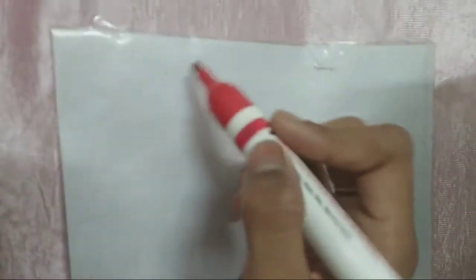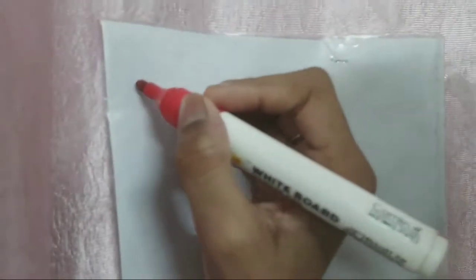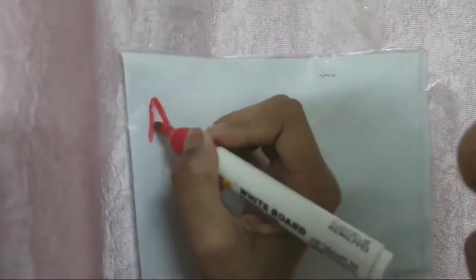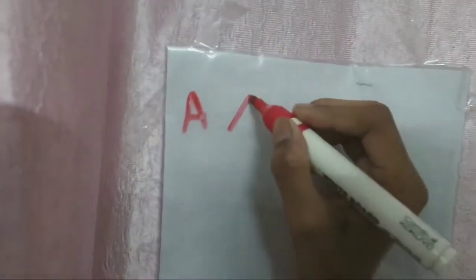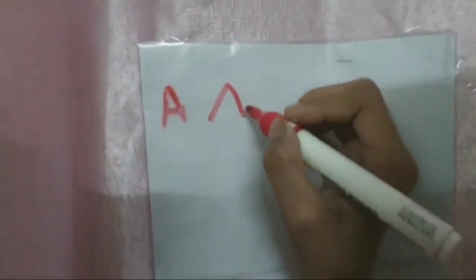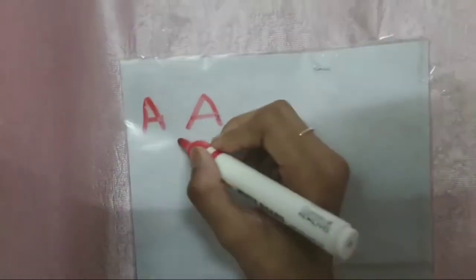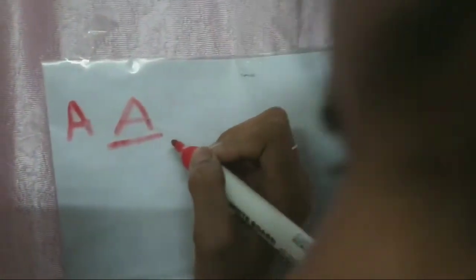See children, how to write the letter A? I am writing here. This is the letter A. First you will draw a slanting line, then another slanting line, and then a sleeping line. This is the letter A.